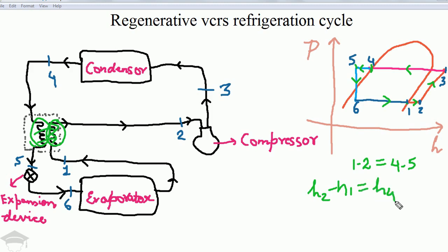h4 minus h5, if we are considering 100% efficiency and no irreversibility in the system. The heat that is rejected from 4 to 5 will be taken in from 1 to 2. So this is the